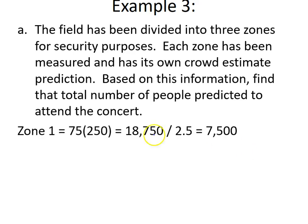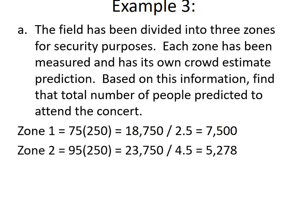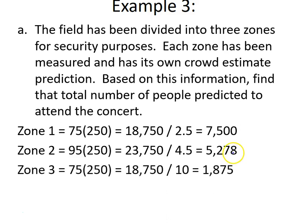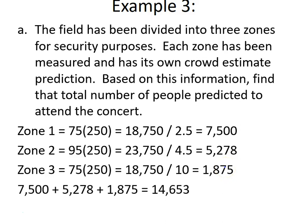Zone one has an area of 18,750 square feet divided by 2.5 square feet per person, giving 7,500 people. Zone two has an area of 95 times 250 equals 23,750 divided by 4.5, giving about 5,278 people — we round up since we don't have partial people. Zone three: 75 times 250 divided by 10 equals 1,875 people. Adding all three zones together gives a total of 14,653 people predicted to attend the concert.